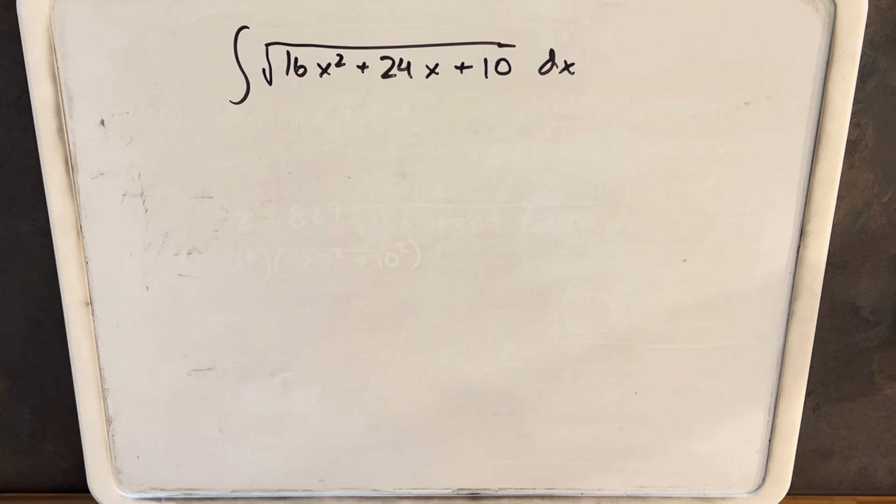Hey, we have on the board this integral: the square root of 16x squared plus 24x plus 10 dx. Initially I chose this, I thought this would be a quick and easy integral, and then I actually did it and realized there's quite a bit more going on, but it's good because it'll show a lot of different techniques in one problem.